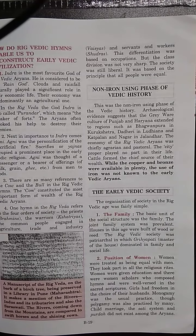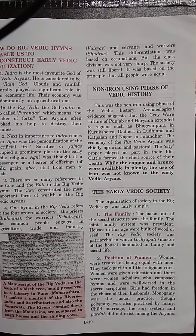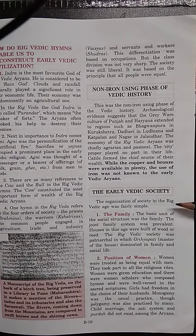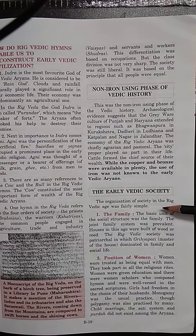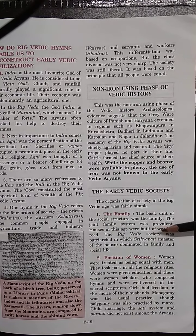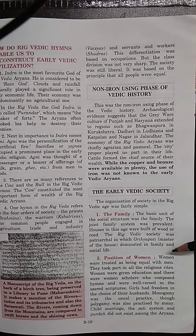When we talk about their society, we consider family structure, the position of men and women, and types of economic activity. The family was the basic unit of the social structure, and the joint family system was in practice. Houses were built of wood or reed. The Rig Vedic society was patriarchal, meaning the eldest male member was the master of the house and dominated the family.